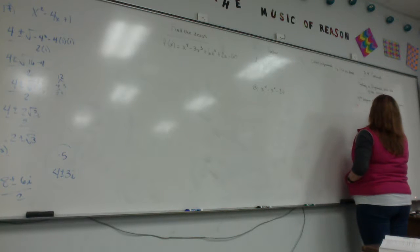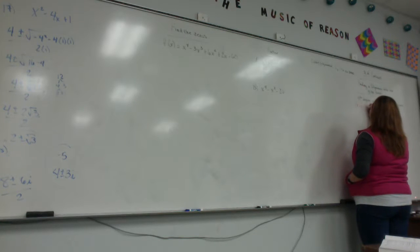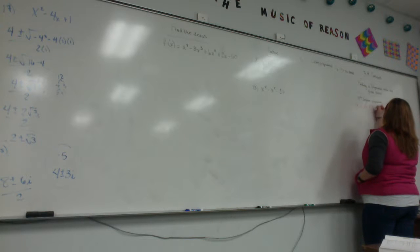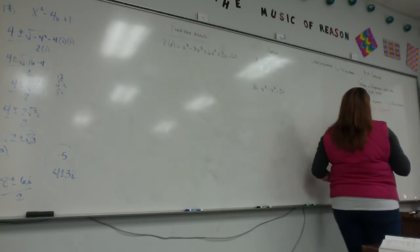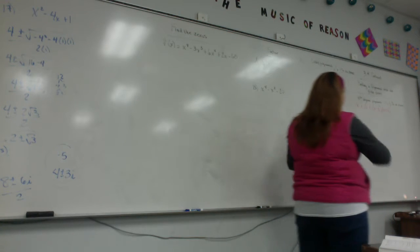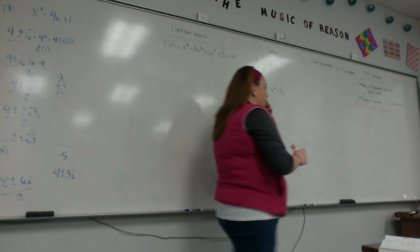I'm going to have x plus 1. I'm going to have x minus 1. I'm going to have x minus 3i, and then I have to take the opposite of that and say x plus 3i, because I technically have four zeros. Then I'm going to FOIL all of those together to get my answer.